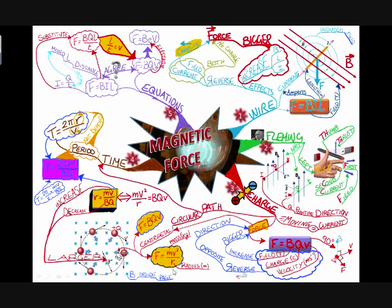The centripetal force equals mass times velocity squared divided by the radius. Also, force equals the magnetic flux density times charge times the velocity. If we substitute these equations, we can calculate the radius. So the radius equals the mass times the velocity divided by the magnetic flux density times the charge. By increasing velocity, we increase the radius. If we were to decrease the magnetic flux density, we also increase the radius.